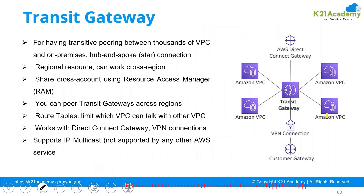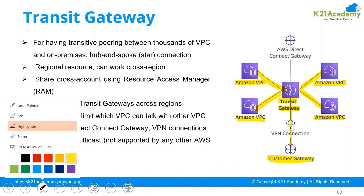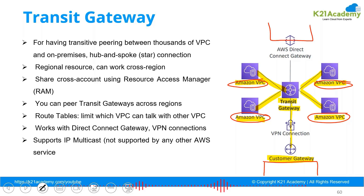To simplify this, Amazon introduced Transit Gateway. If you have four VPCs trying to communicate with each other, you can connect them all to the Transit Gateway and they will all start talking to each other. If you have a customer gateway, the VPN only needs to connect to the Transit Gateway, and then that on-premises location will be able to communicate with all locations connected via the Transit Gateway.